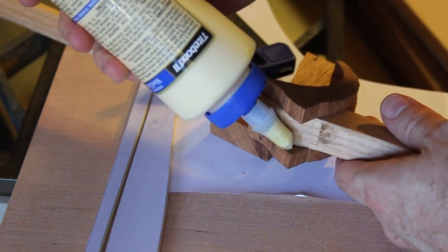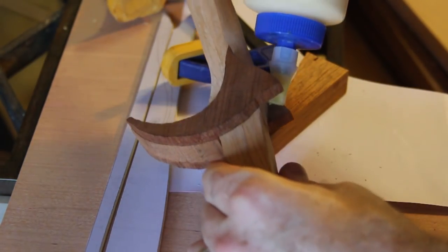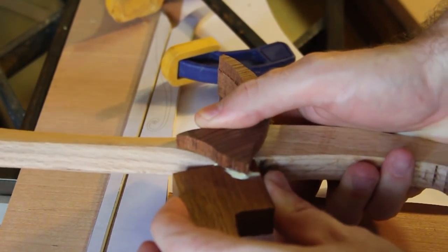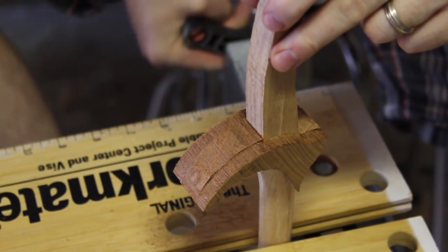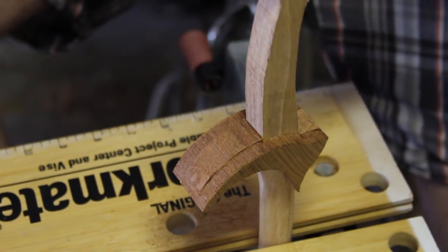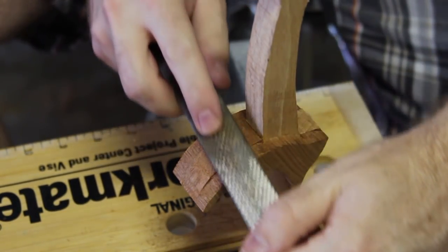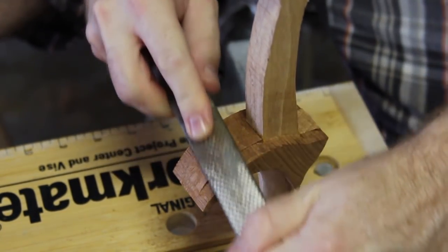And with the front done, I did the same thing on the back side. Once the glue was dry, I trimmed off the excess and then picked up the files again to do all the final shaping for the handguard.